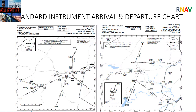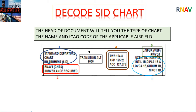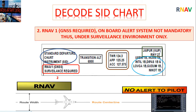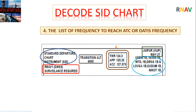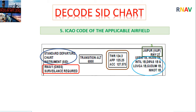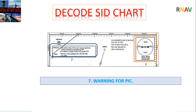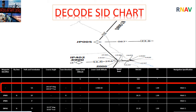These are STAR and SID charts. To decode a Standard Instrument Departure chart: the header tells you the chart type, the name, and ICAO code of the applicable airfield. For example: chart type is Standard Instrument Departure, RNAV 1, GNSS required on board, alert system not mandatory, and it is under a surveillance environment. Additional elements include the transition altitude, list of frequencies to reach ATC or datalink, code of the applicable airfield, and the list of departure routes depicted on the chart.